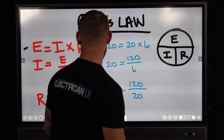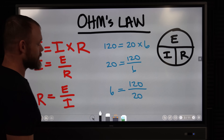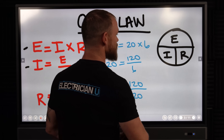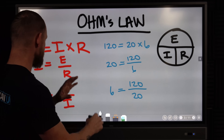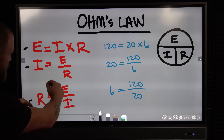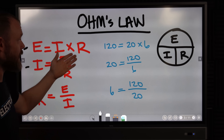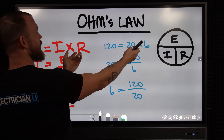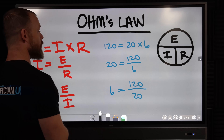Super simple. And lastly, as you'd expect, R equals E over I. That little chart is really helpful because otherwise you'd have to do all this math and move things around. But if we have an amperage of 20 amps times a 6-ohm resistor, it's going to be 120 volts.